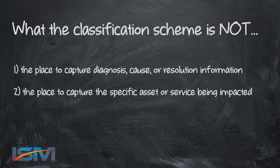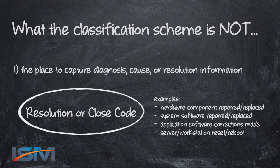What the classification scheme is not is the place to record or capture diagnosis, cause, or resolution information. It's also not the spot to capture the specific asset or service being impacted. The resolution or cause code is the place where we want to capture what we did to restore service — did we reboot a server, replace a switch, make a modification to application code? Those are resolution codes and they need to stay at that attribute level. The classification scheme itself should not attempt to capture resolution codes.